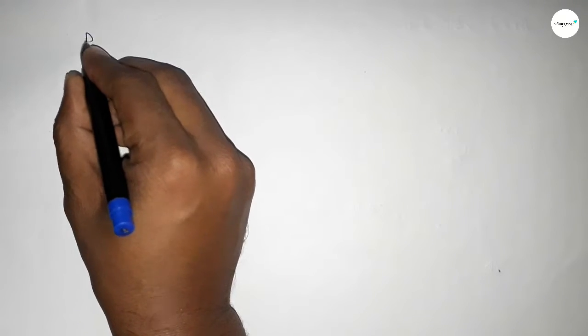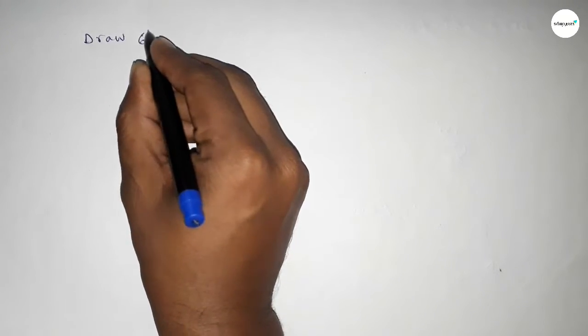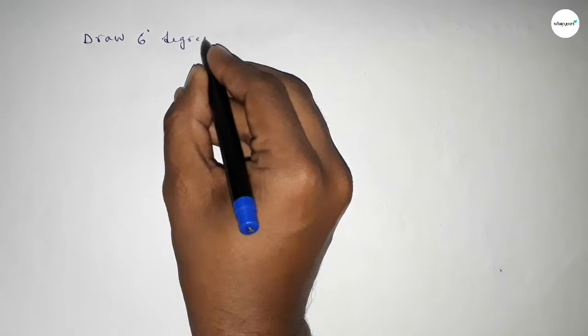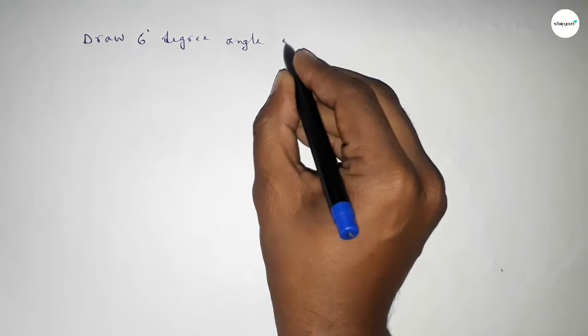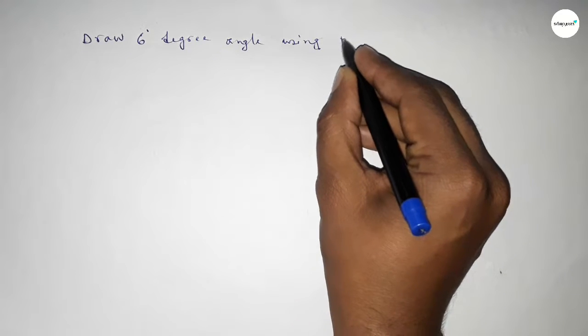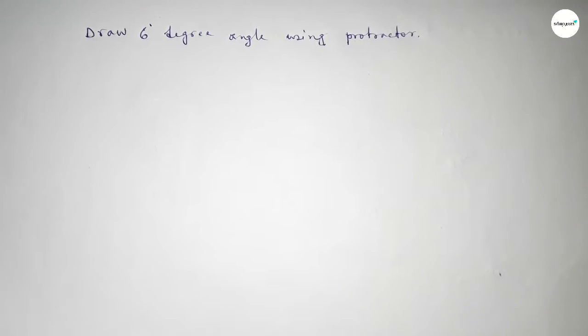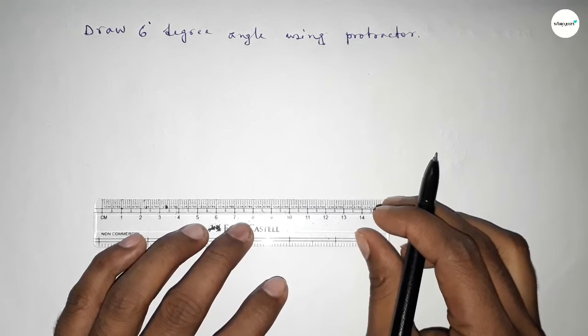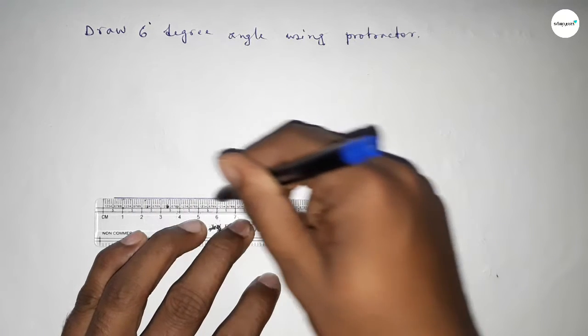Hi everyone, welcome to SI Share Classes. Today in this video we have to draw a six degree angle by using a protractor. So constructing six degrees. Let's start the video. First of all, we have to draw here a line.